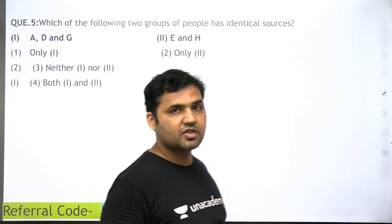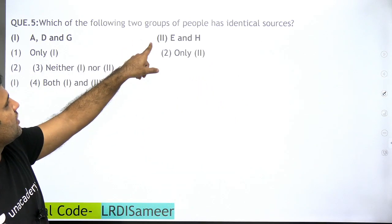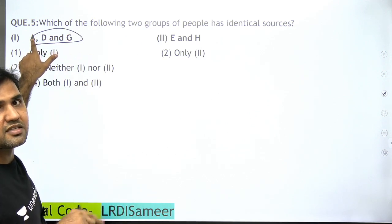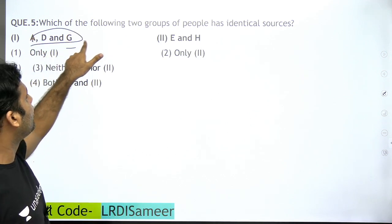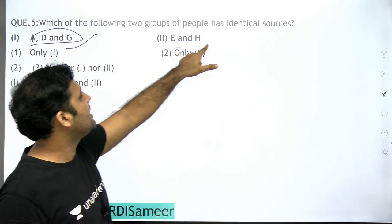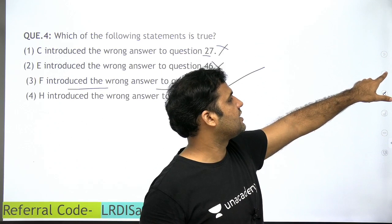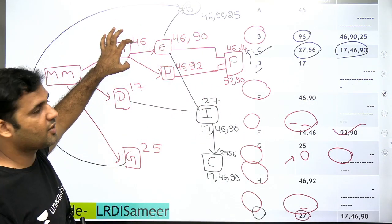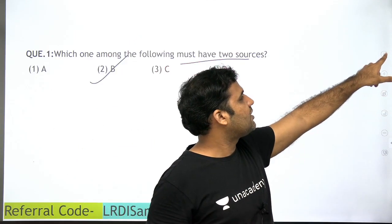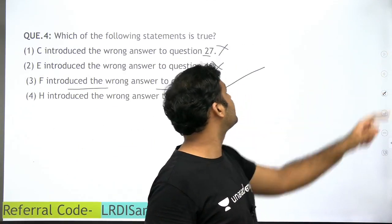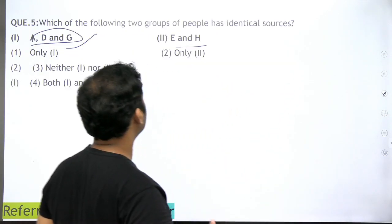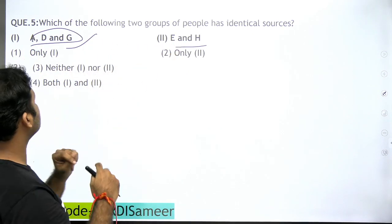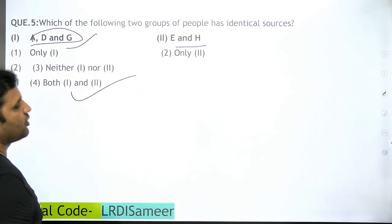There is one more question — five questions were there in the complete set. Which of the following two groups of people have identical sources? Option 1: A, D, and G — yes, all three take their answer key from the mastermind, so they have the same identical source. Option 2: E and H — yes, both take their answer key from A, so they also have the same identical source. So both group 1 and group 2 have identical sources, which is option 4.